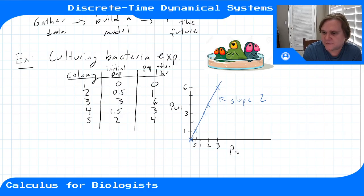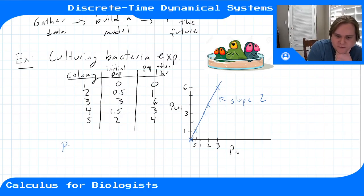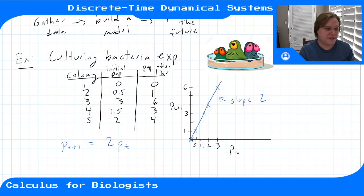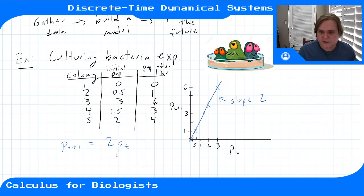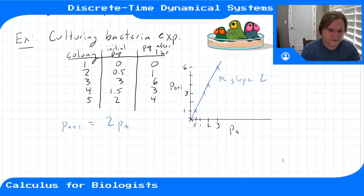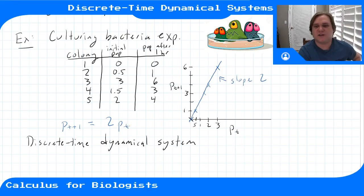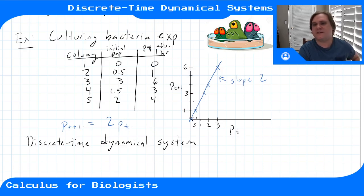So if we describe this function from p(t) to p(t+1) — population at time t to population at time t plus one, one hour later — it would follow this line. Population one hour later is twice what you start with. This equation is an example of a discrete time dynamical system because it describes a quantity that's changing over time as a function of itself, changing in discrete time since we're measuring from one time to one hour later — these discrete intervals.